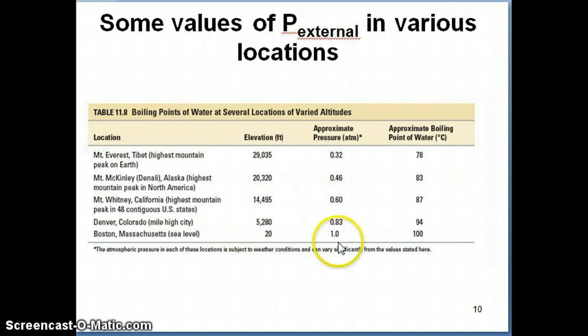Because there's fewer and fewer gas particles, a substance that might have a normal boiling point of 100 degrees at sea level, where the atmospheric pressure is 1 atmosphere, will drop its boiling point to 83 degrees when the atmospheric pressure is 0.46 atmosphere.